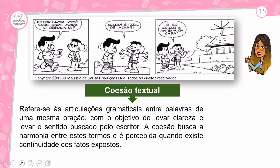Agora uma tirinha mostrando coesão: 'Ei, por favor, você sabe onde mora o Cebolinha? Claro, é fácil de achar. É só olhar a antena da casa.' Lembra como é o cabelinho do Cebolinha? A coesão refere-se às articulações gramaticais entre palavras de uma mesma oração, com o objetivo de levar clareza e o sentido buscado pelo escritor.